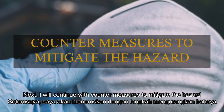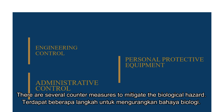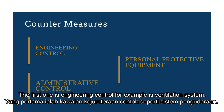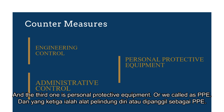Next, I will continue with the countermeasures to mitigate biological hazards. There are several countermeasures: the first one is engineering control, for example a ventilation system; the second one is administrative control; and the third one is personnel protective equipment, or PPE.